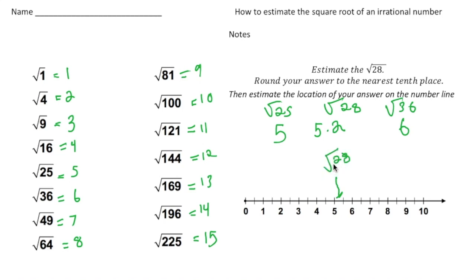So what you do to estimate the square root of an irrational number is find the two perfect square roots to the left and right of it that you know. The square root of 25 is 5, and the square root of 36 is 6, and then you estimate where it falls between 5 and 6.